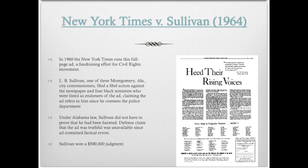Now there were factual errors in the ad, but L.B. Sullivan sued as a member of the city commission, saying that he was identifiable in the ad because he was the person who oversaw the police. So they were basically calling him out and calling him racist, and he had a variety of other claims that he felt were going to damage his reputation. So he sued. Because there were errors, they couldn't use defense of truth, which of course is the ultimate defense against libel. So what they had to face was a $500,000 judgment for Sullivan at the initial hearing.